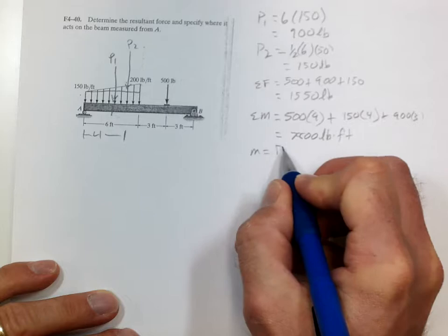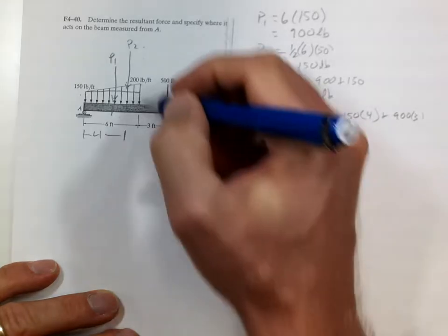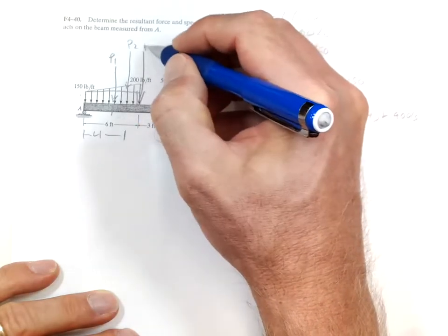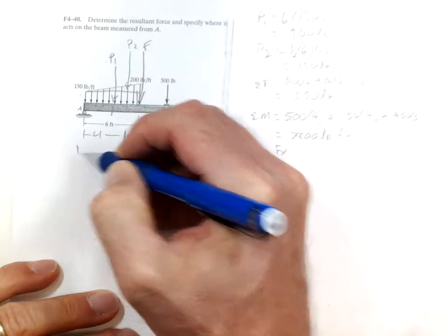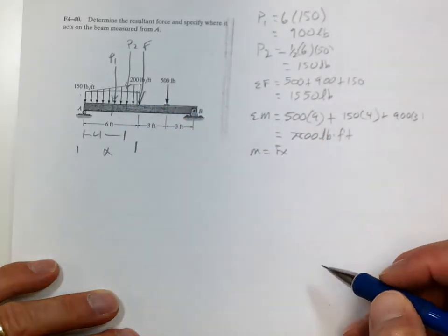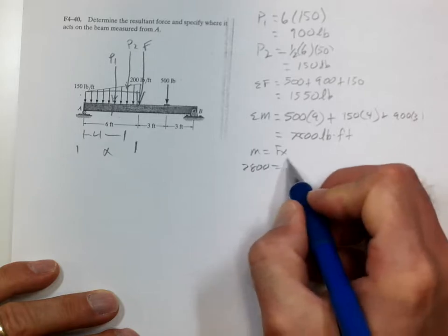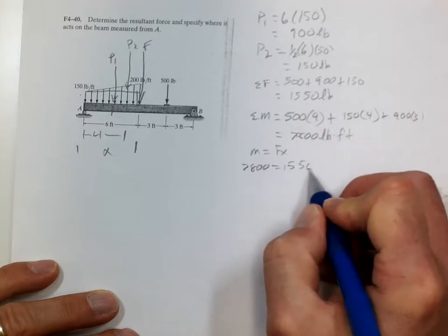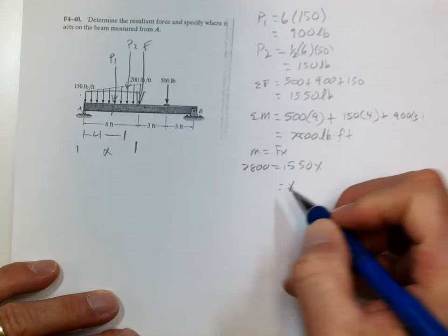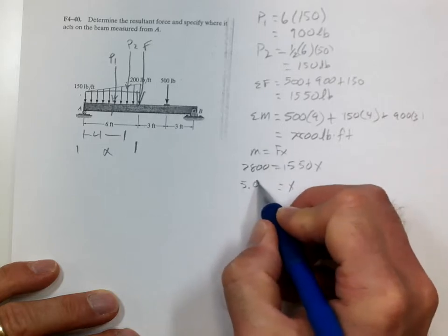Moment equals force times distance. To find the distance where the full force acts, the moment is 7,800, the force is 1550 times x. So x equals 5.03 feet.